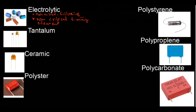Next, tantalum capacitors — also polarized, with a plus mark. They have a low ESR (equivalent series resistance) value. Then ceramic capacitors: these are mainly used in RF circuits and as high-frequency bypass capacitors. Most digital circuits use ceramic capacitors as bypass capacitors.